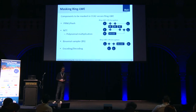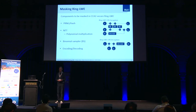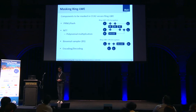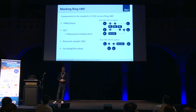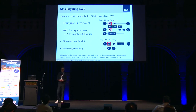Let's look at which components we need to apply masking to in order to secure Ring LWE. First, there's the PRNG and hash functions required by the CCA2 conversion — masking for these is already known from the literature, so we could rely on that. Then there's the polynomial multiplication, usually realized with a Number Theoretic Transform (NTT), which reduces complexity from O(n²) to O(n log n). Masking the NTT is straightforward because it is a linear operation and you can apply the NTT to each share separately.